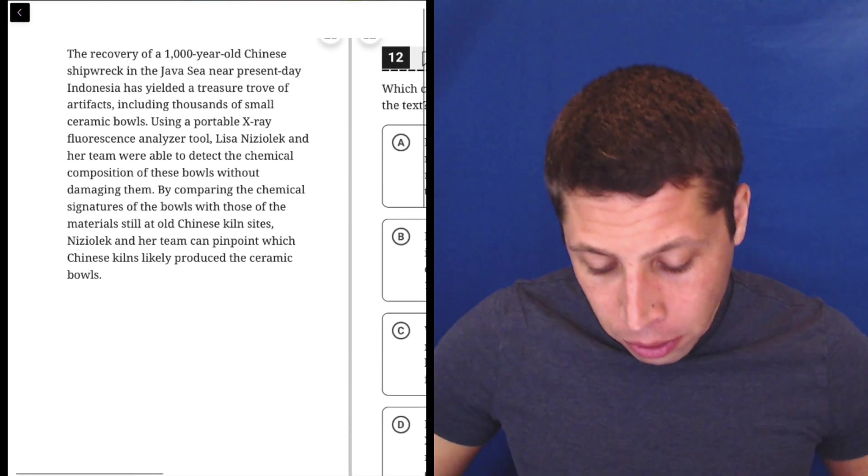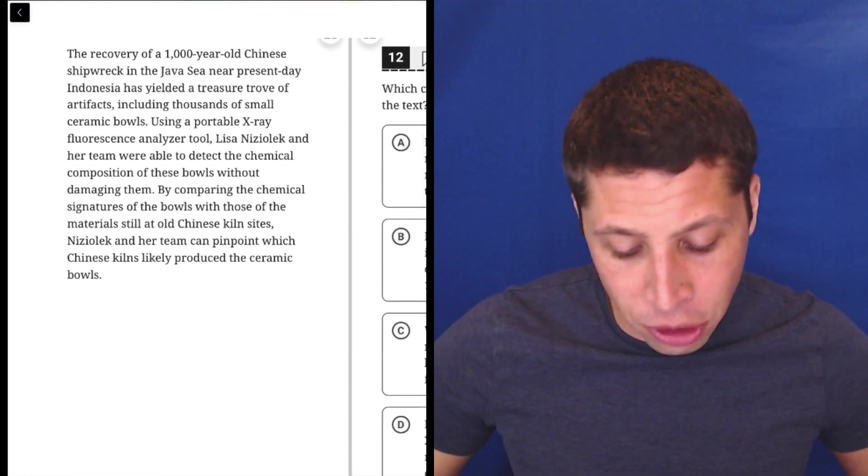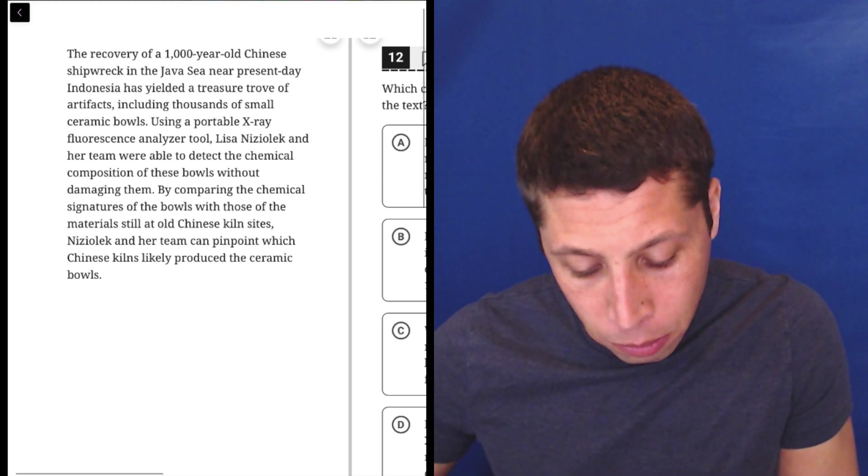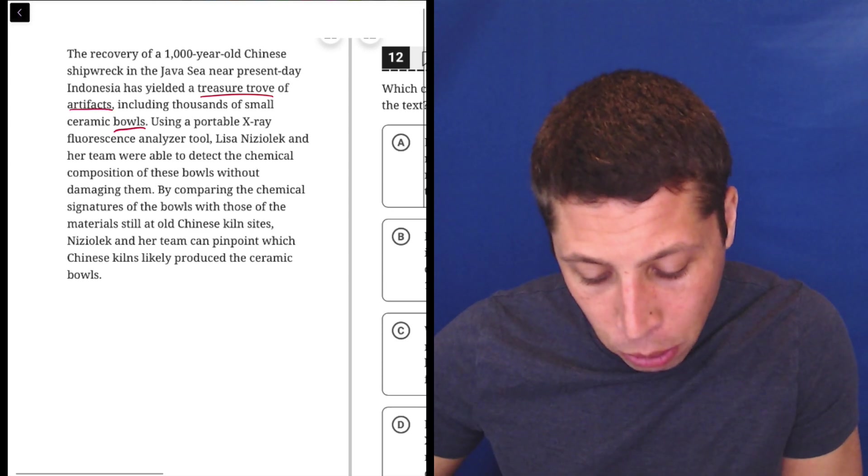Let's take a look. The recovery of a 1,000-year-old Chinese shipwreck in the Java Sea near present-day Indonesia has yielded a treasure trove of artifacts, including thousands of small ceramic bowls. So, treasure trove, artifacts, bowls. Seems good.